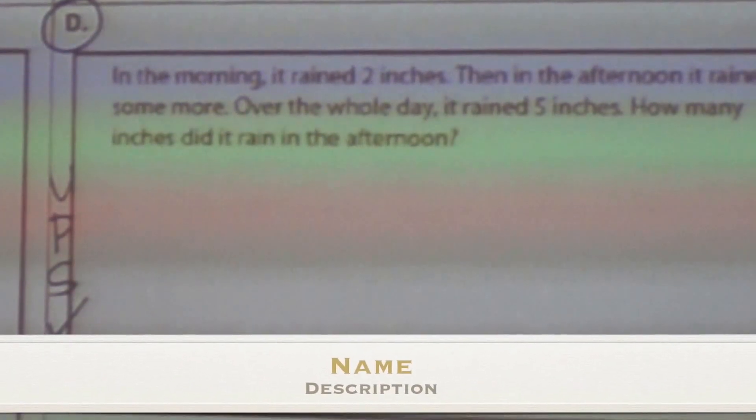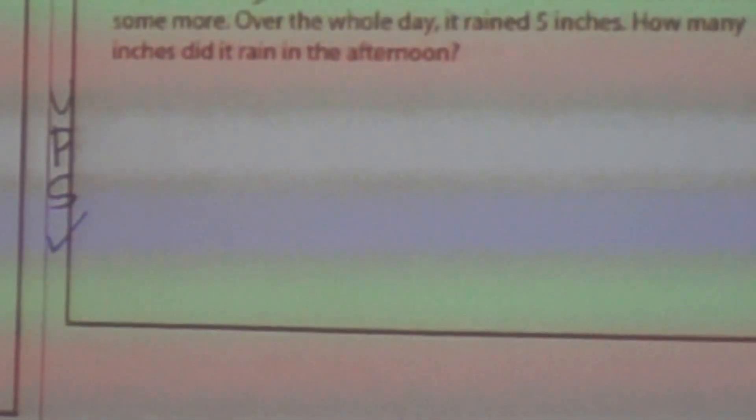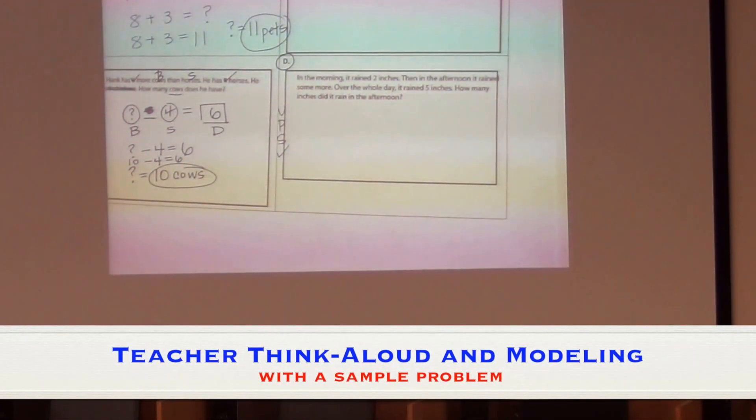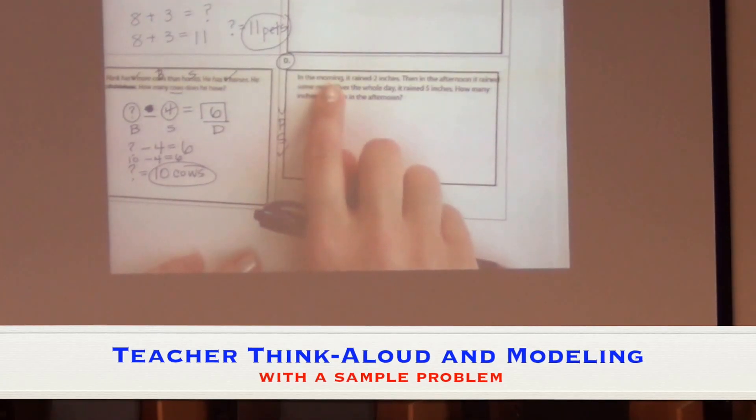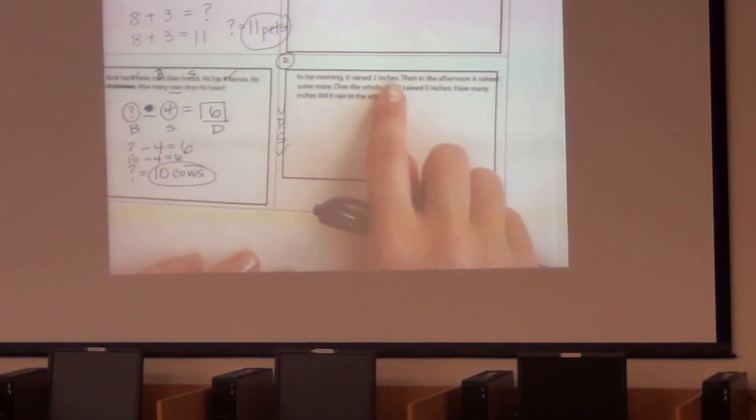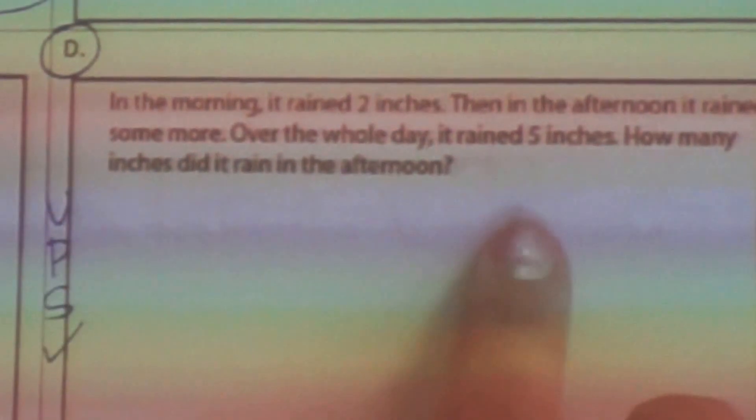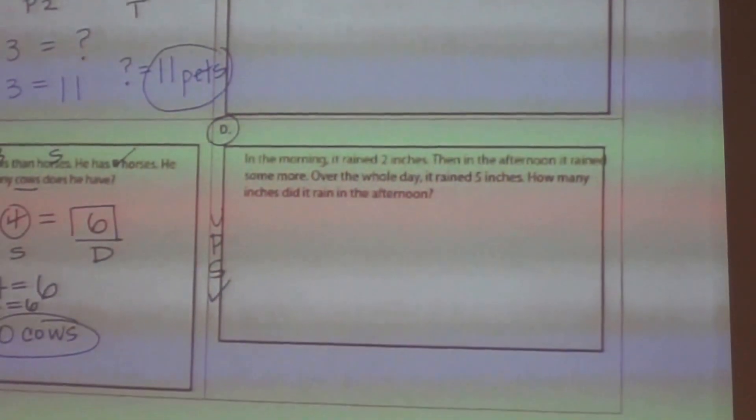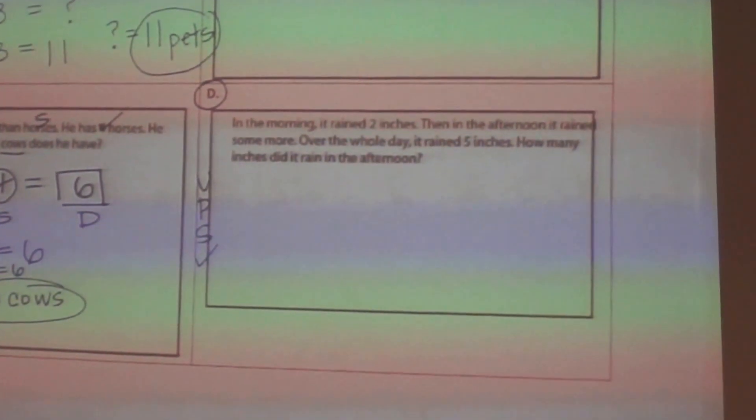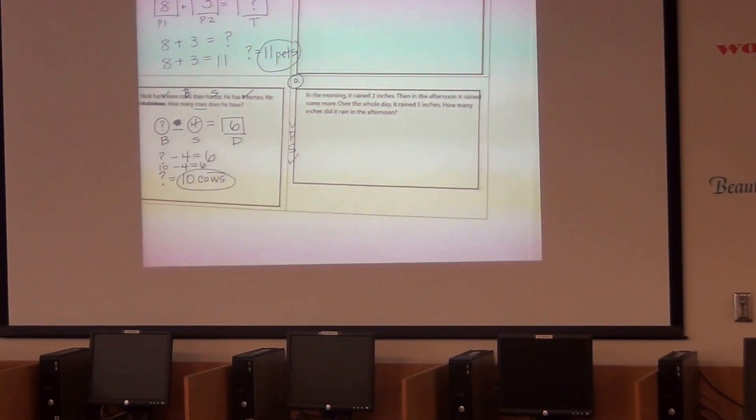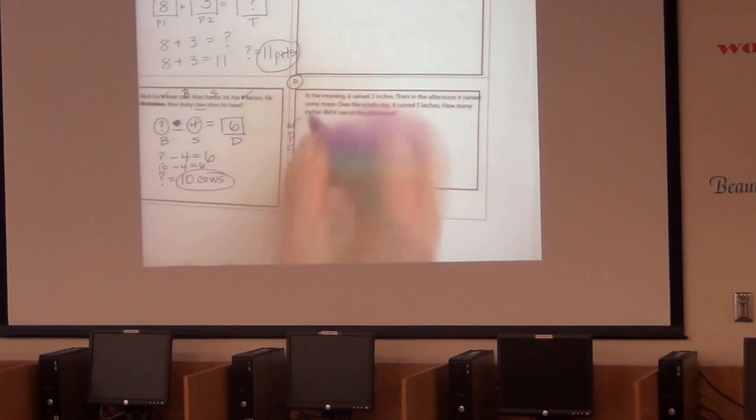Let's go ahead and write that to the side to help me remember how to work through this word problem. The U stands for understand. How can I understand a word problem? By reading it. Let's read this problem all together: In the morning, it rained two inches. Then in the afternoon, it rained some more. Over the whole day, it rained five inches. How many inches did it rain in the afternoon? So we read it, and now we're going to put it into our own words. What do we have to figure out? We're actually going to figure out the change in the rain.